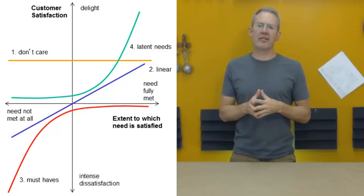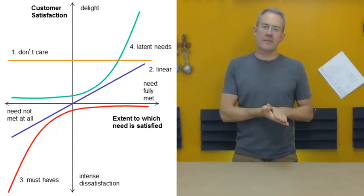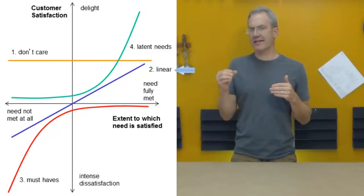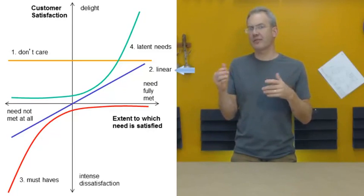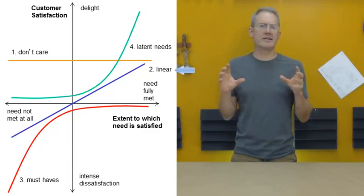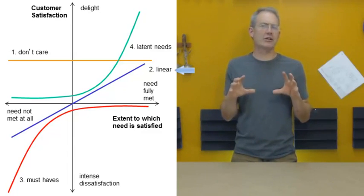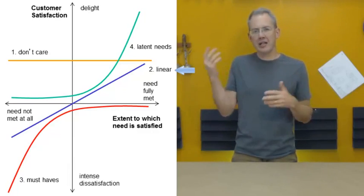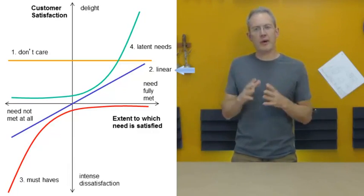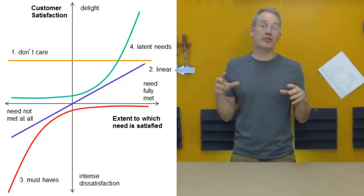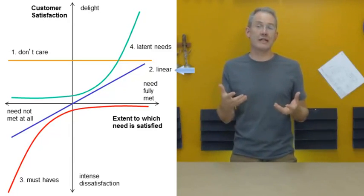The second category of need within the Kano framework are the linear needs. Linear needs are those for which a little bit better addressing of the need will result in a little more satisfaction and vice versa. So, for instance, cost or affordability is a standard kind of linear need, meaning if the device costs $20, I'm half as happy as if it costs $10. There's a very linear response within certain ranges to price and affordability.